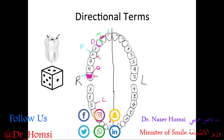It gets a little more intricate when we compare anterior teeth with posterior teeth. The anterior teeth — incisors and canines — have a facial surface that can also be called the labial surface, because it's up against the inside of the lips. This is just another, more specific way to talk about the facial surface of anterior teeth.